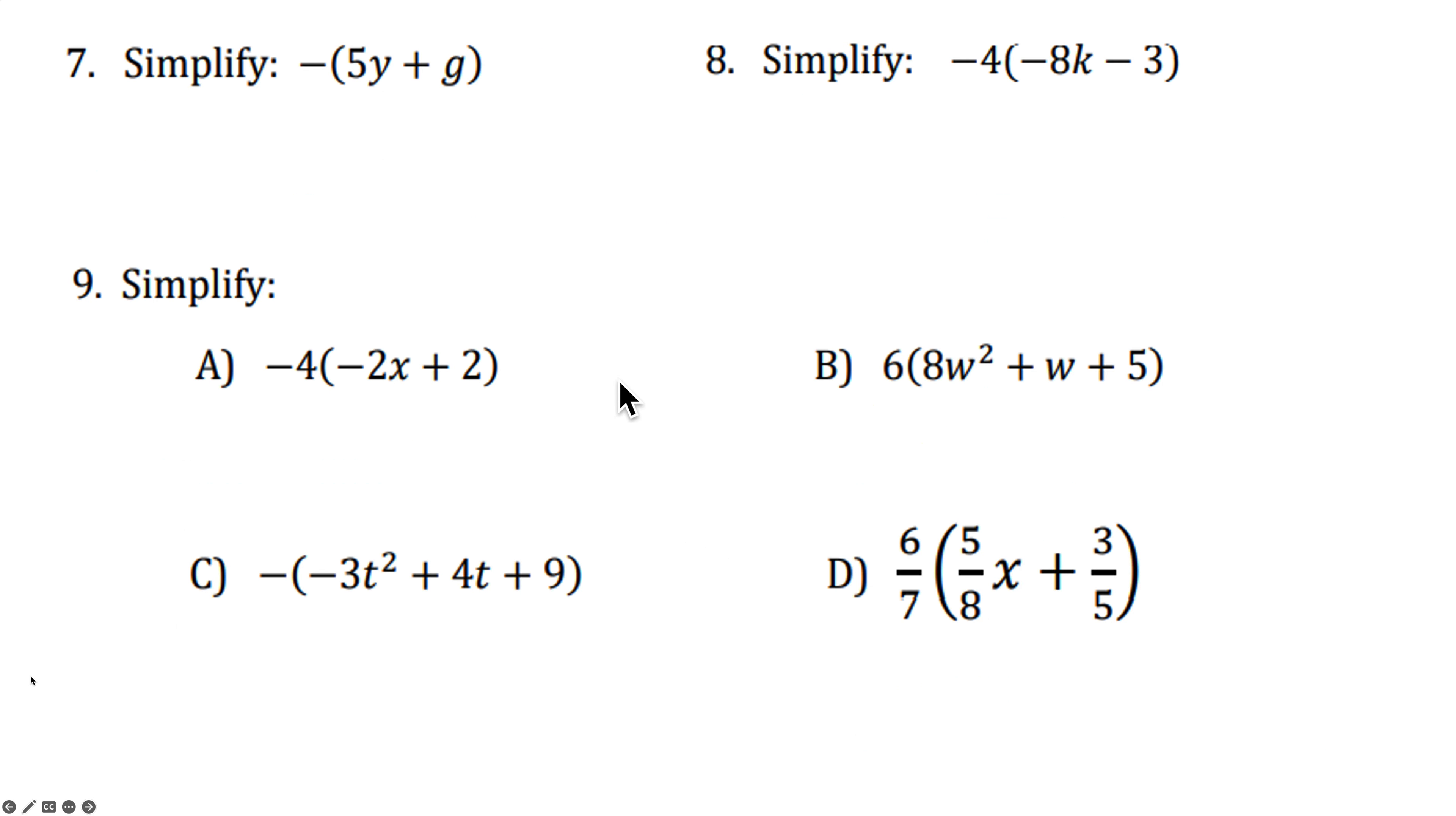All right. Number 7. You have a negative in front of the parentheses. You have to use the distributive property. This is like having a negative 1 in front of the parentheses. So we multiply the negative 1 to both terms. That changes it to negative 5Y minus G. Number 8. Negative 4 times the parentheses. Again, distributive property. Negative 4 times negative 8K. Negative 4 times negative 3. Oops. I forgot. My answer disappeared. So that's going to give me a negative times a negative, which will be a positive 32K. A negative 4 times a negative 3. That will give me a positive 12.